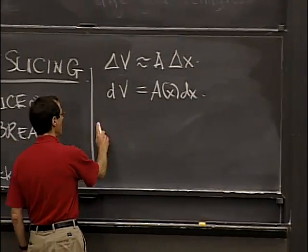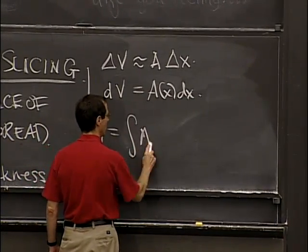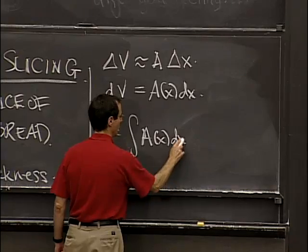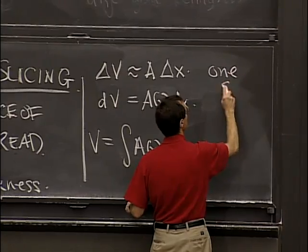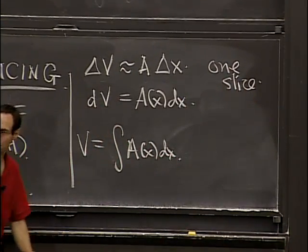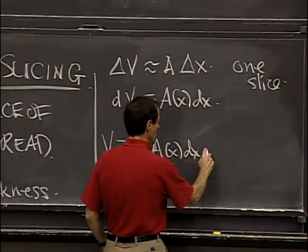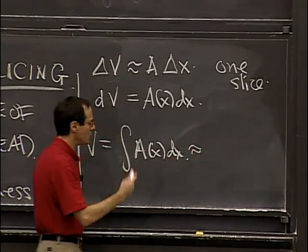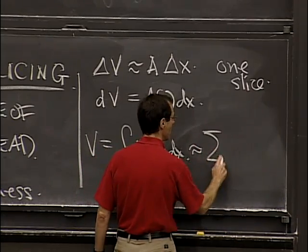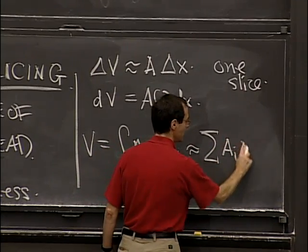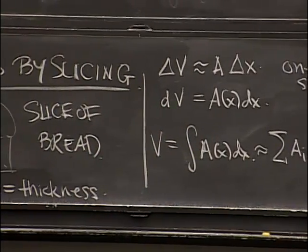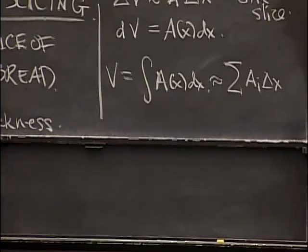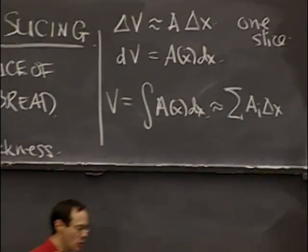The whole volume you get by adding up. This is one slice, and the total is the sum — you should think of it intuitively as being analogous to the Riemann sum, where you take each slice individually. That's just a superficial and intuitive way of looking at it.